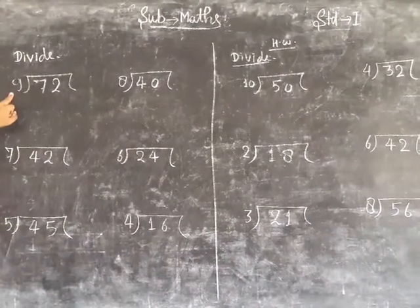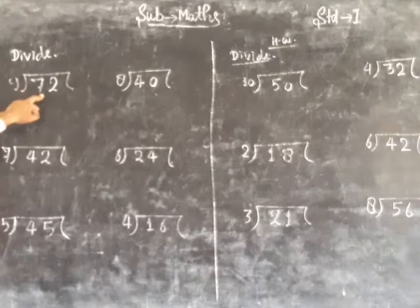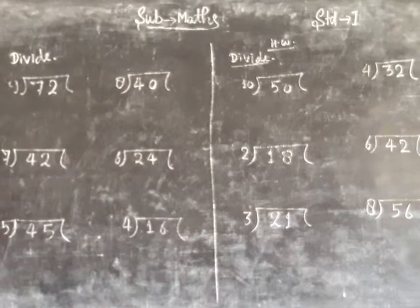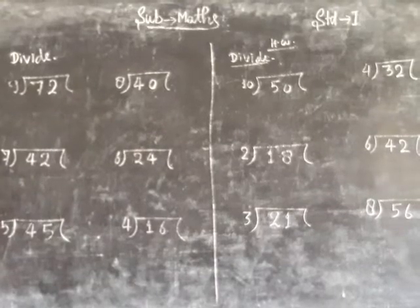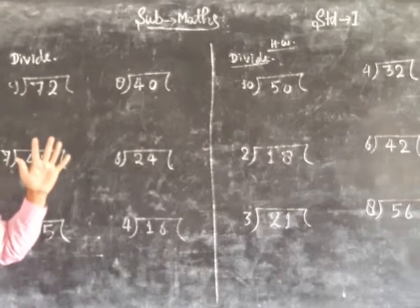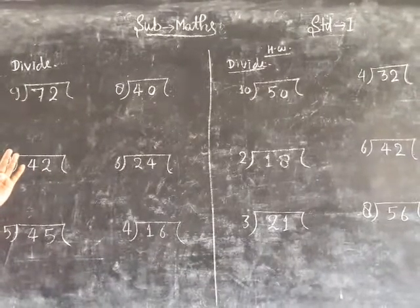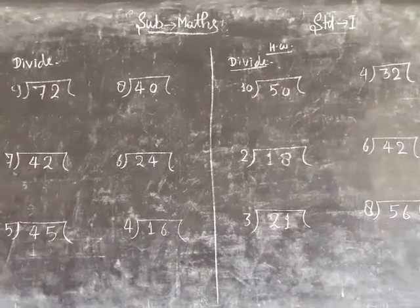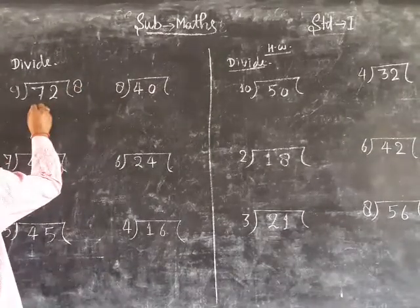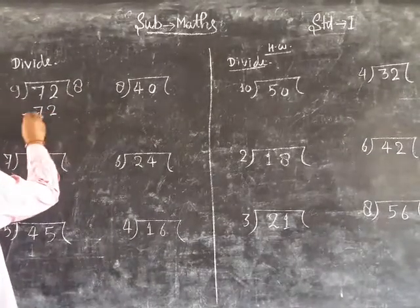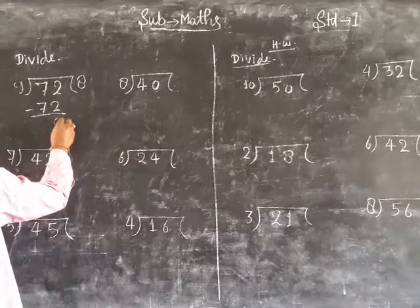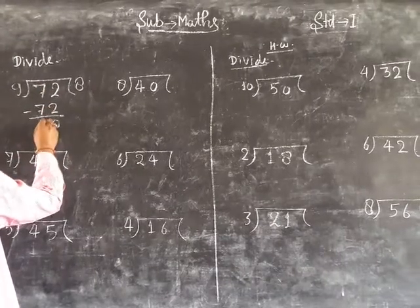Long term is 9 divided by 72. 9 plus 9, 9 plus 18, 9 plus 27, 9 plus 36, 9 plus 45, 9 plus 54, 9 plus 63, 9 plus 72. 9 plus 72 minus 72 minus 0, 0.